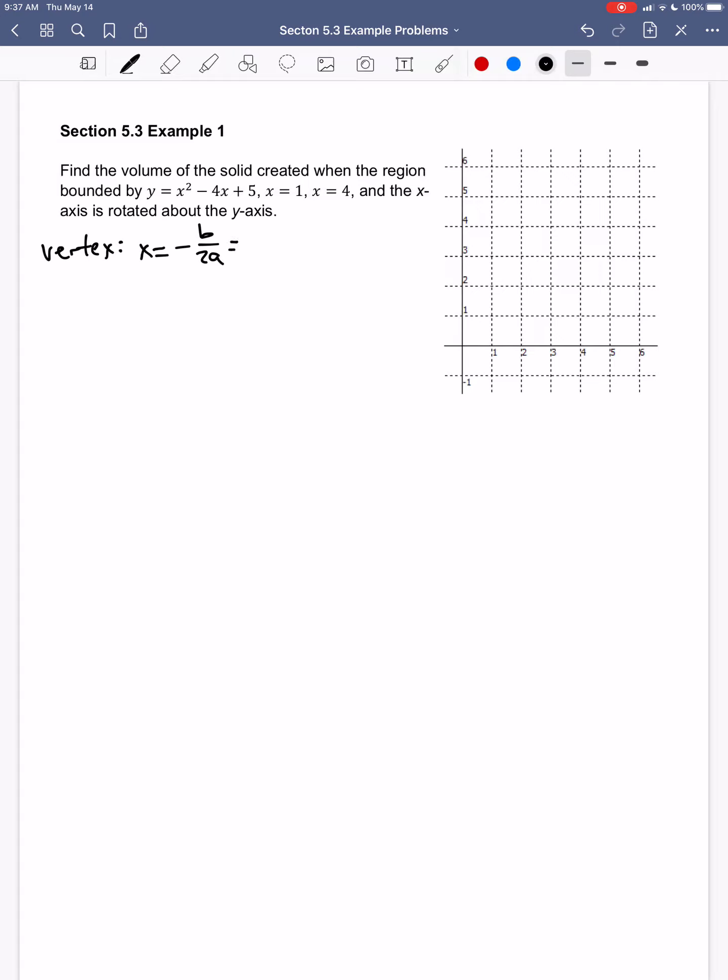My b here is negative 4, and a is 1. Those are the values from ax squared plus bx plus c. That ends up being 2, and then my y-coordinate would be 2 squared minus 4 times 2 plus 5, so that's 4 minus 8, negative 4 plus 5 is 1, so my vertex is the point (2, 1).